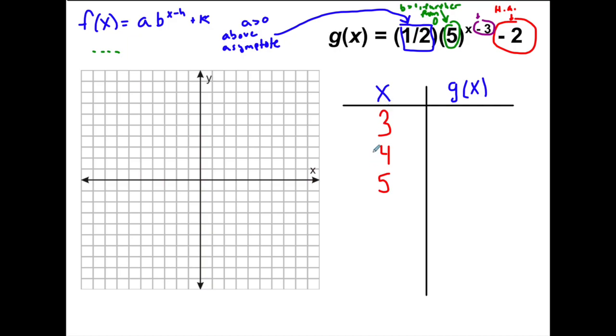Now, you can see in my table here, I've started with the numbers three, four, and five. Remember, we want to work smarter, not harder here. So, what I'm doing is I'm going to start with three, because three is going to make this exponent equal to zero. So, why not just get myself a nice, easy output? So, three minus three is zero. Five to the zero is one. A half times one is a half. A half minus two is negative one and a half.